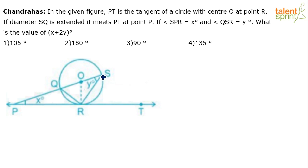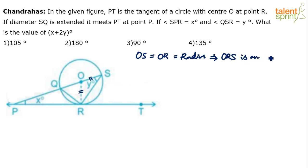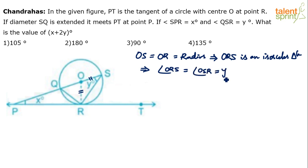Consider triangle ORS. In triangle ORS, OS is radius and OR is also radius, while RS is a chord. Since OS equals OR (both are radii), triangle ORS is an isosceles triangle — two sides are equal, so two angles are also equal. This means angle ORS equals angle OSR, which equals Y degrees.